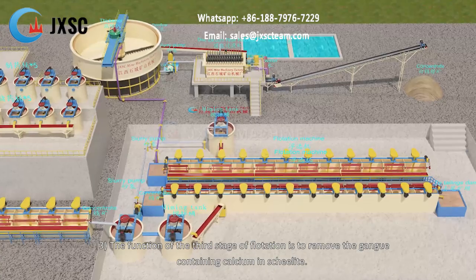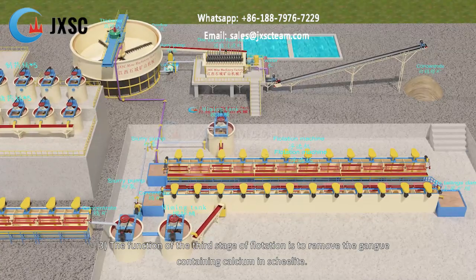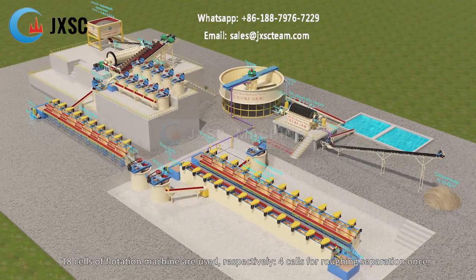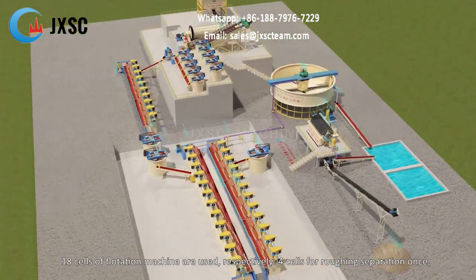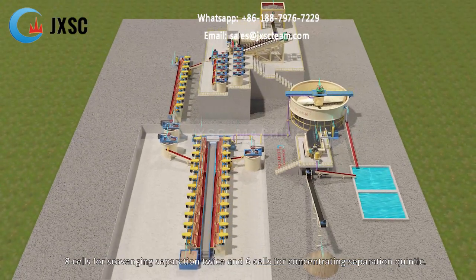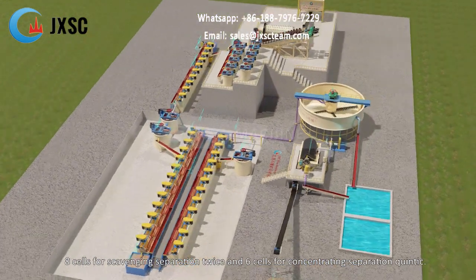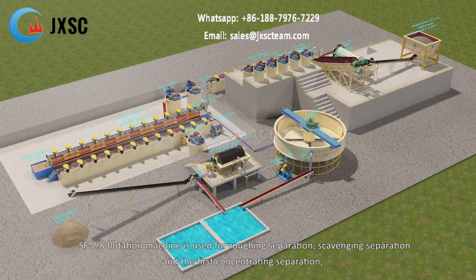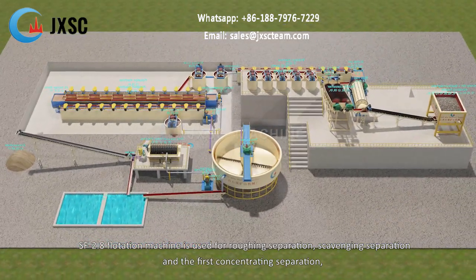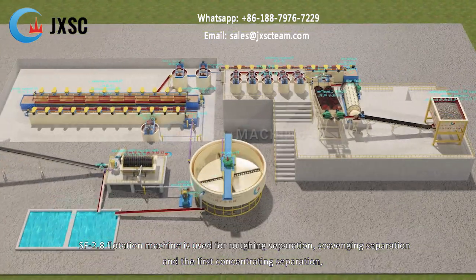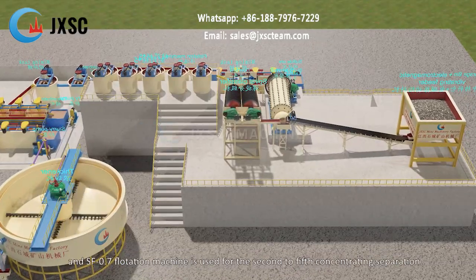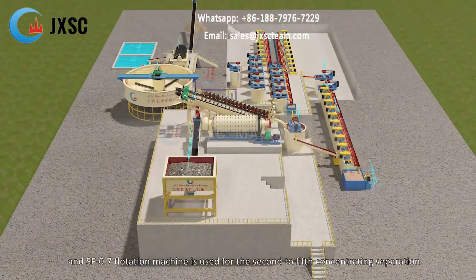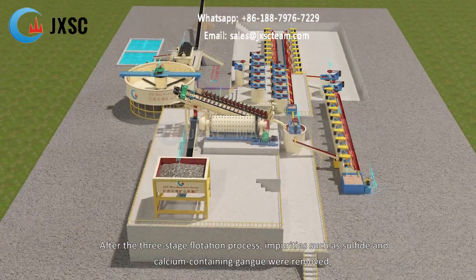The function of the third stage of flotation is to remove the gangue containing calcium in Scheelite. 18 cells of flotation machines are used: 4 cells for roughing separation once, 8 cells for scavenging separation twice, and 6 cells for concentrating separation five times. The SF-2.8 flotation machine is used for roughing separation, scavenging separation, and the first concentrating separation, and the SF-0.7 flotation machine is used for the second to fifth concentrating separation.